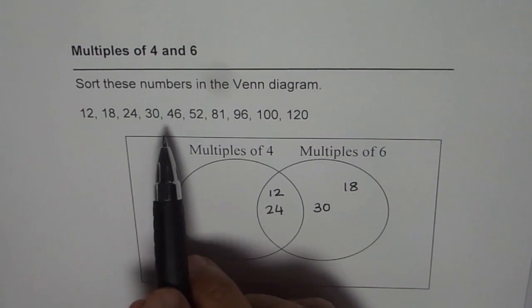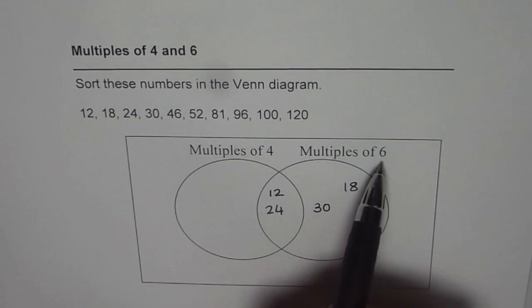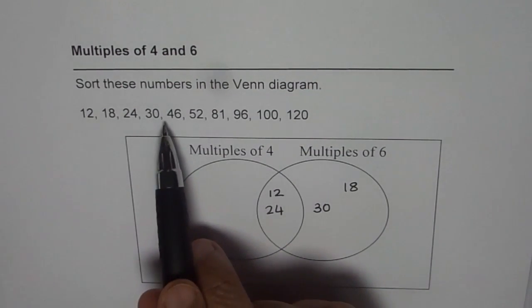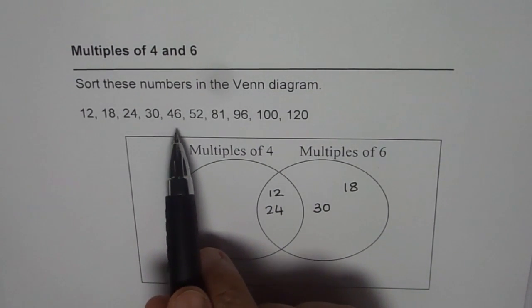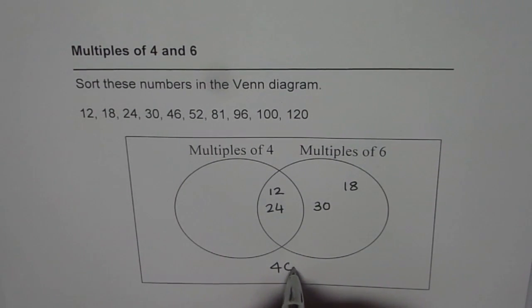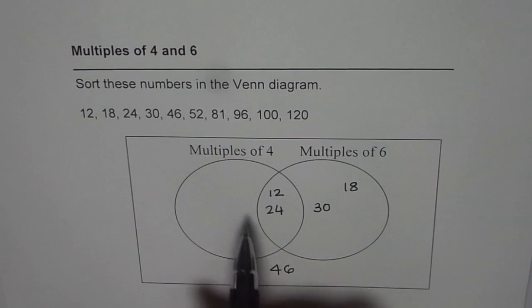46: Let's check. 6 times 7 is 42 and 8 is 48. Well, so it doesn't go. As far as 4 is concerned, 4 times 1 is 4, and then you're left with 6. It cannot be divided. So where will that go? It should come outside. We have to write it outside—it is not a multiple of 4 or 6.